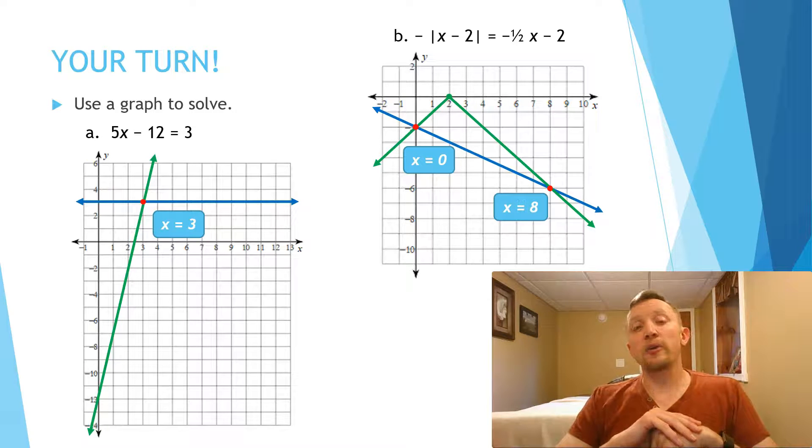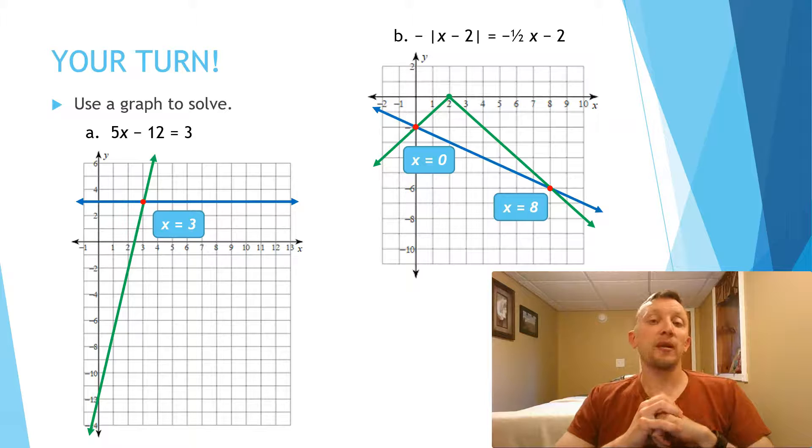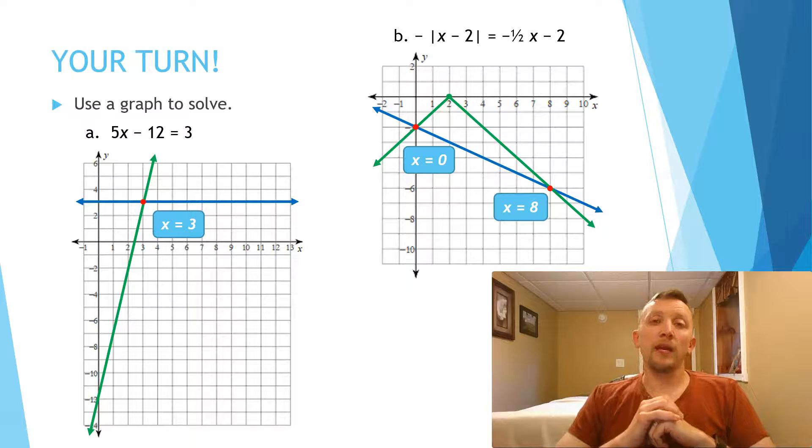The second one, x - 2 means we're going to move it to the right 2 units. But that minus in front means we're going to flip it over the x-axis. So the vertex would be at (2, 0), but then the V would be going downwards. Then we would have the second equation with a y-intercept of -2 and a slope of -1/2. So we'd go down 1 to the right 2, down 1 to the right 2, and so on. And you'd get your two intersection points at x = 0 and x = 8.